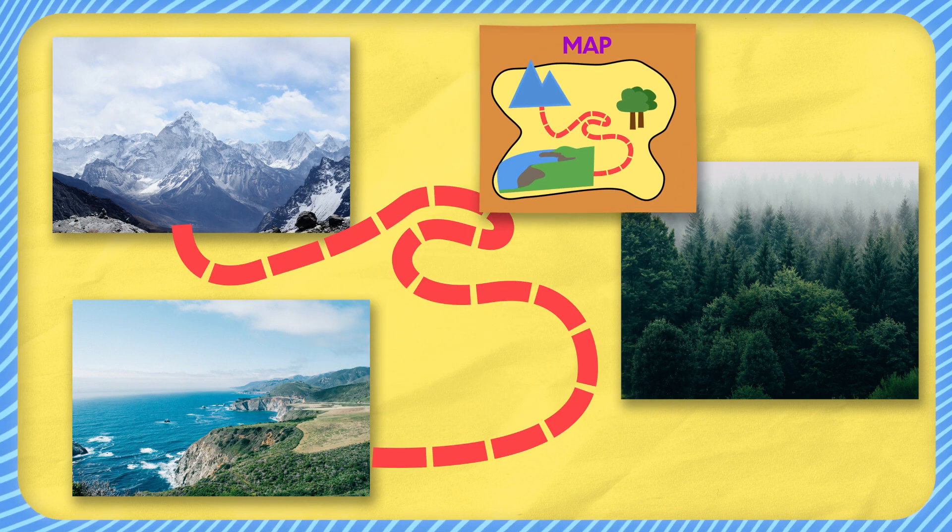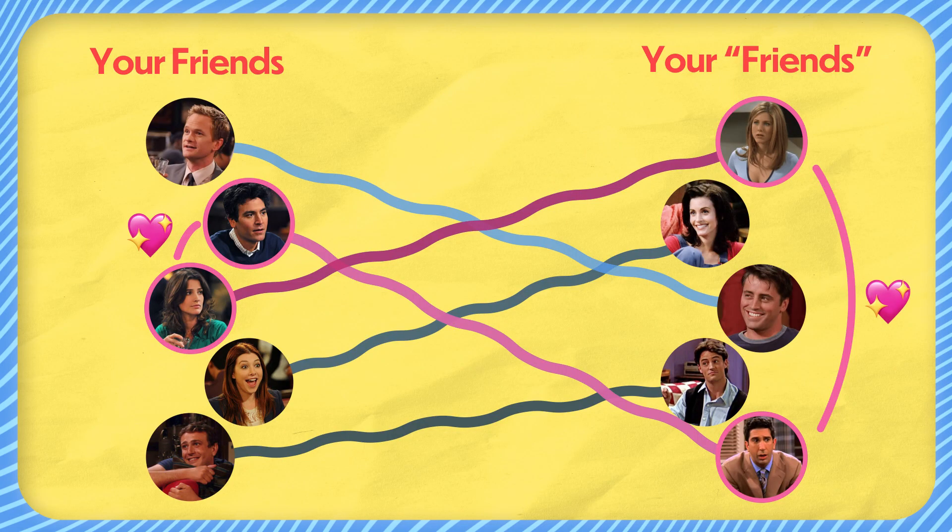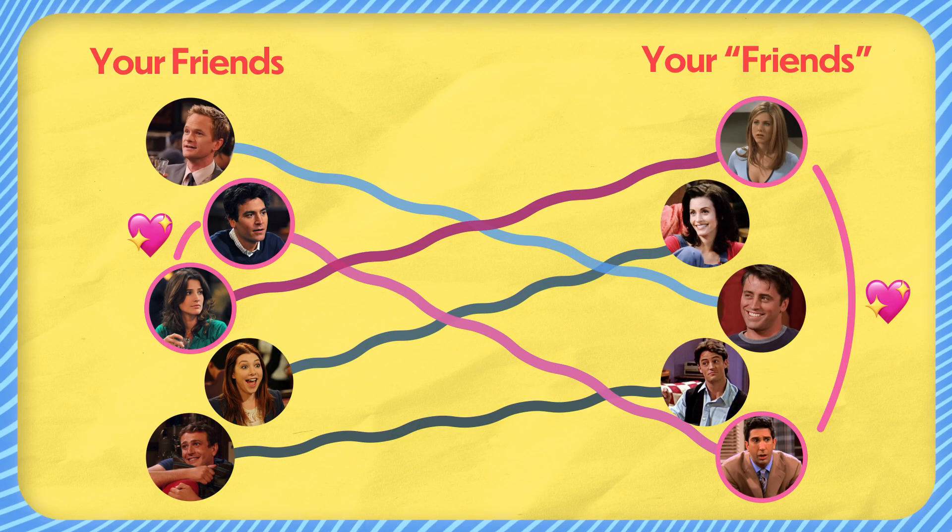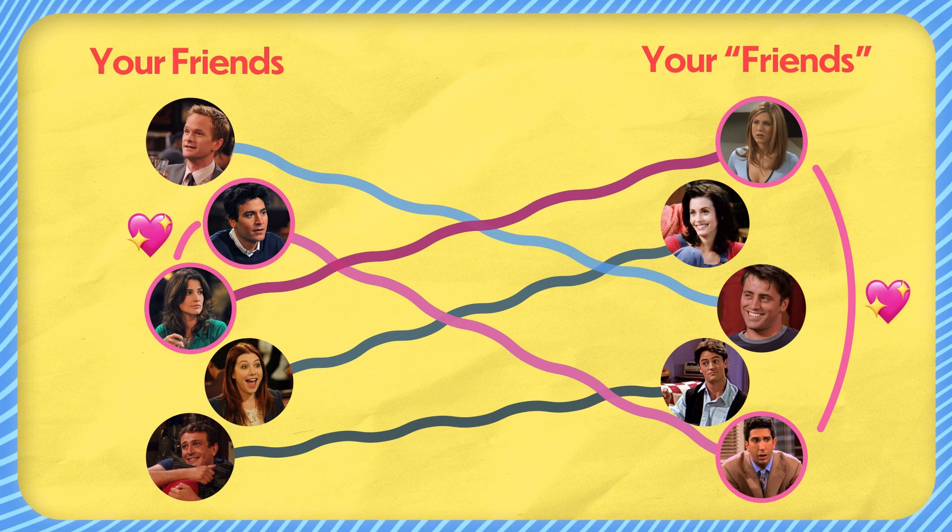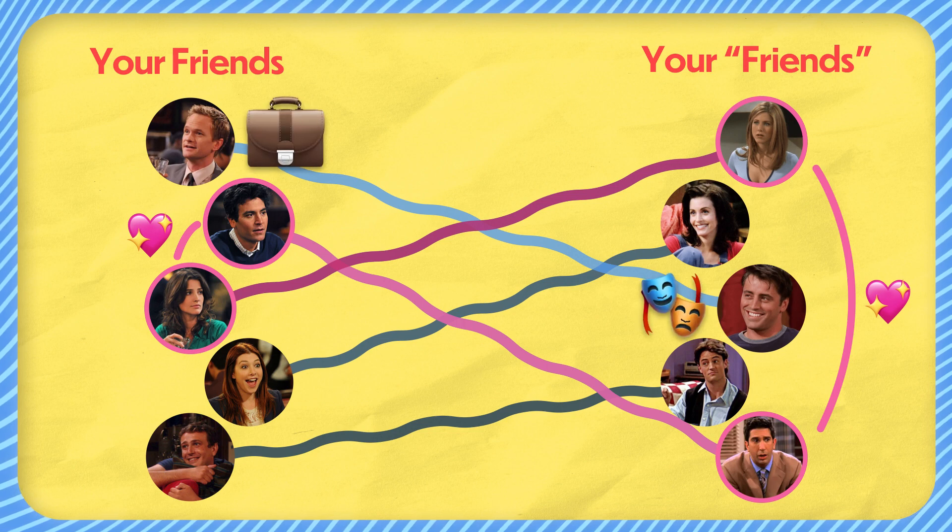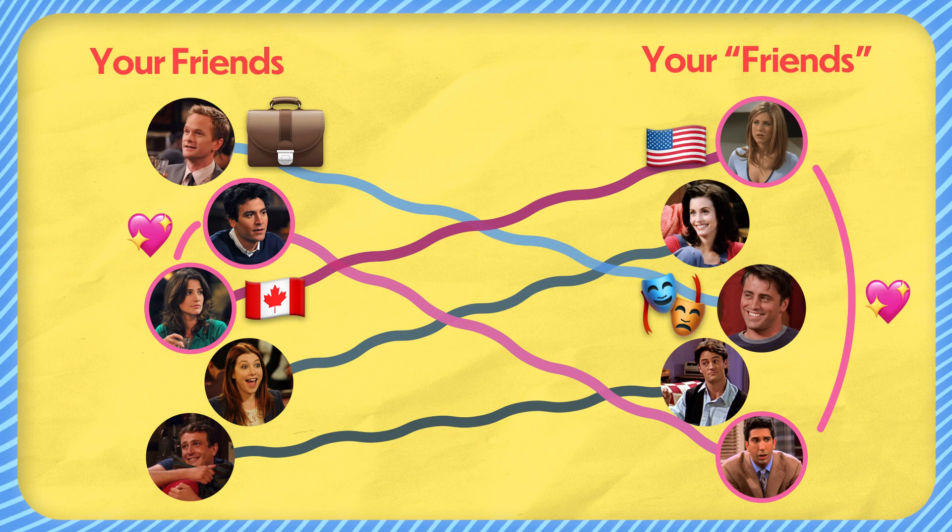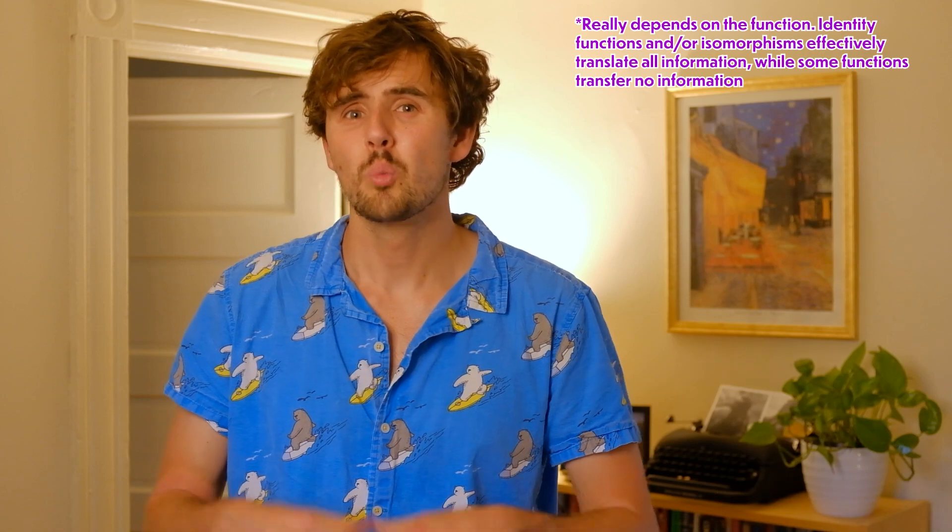And this may not sound very mathematical until you realize it's all still about finding x. Now sometimes a function can be used to transfer or translate information about one group into information about another group. But that doesn't always work. Like back to our Friends example, we saw that this function was relationship-preserving. Meaning that if two people had a relationship in the right group, their respective connectives in the left group would also have a history. But that doesn't mean that this function must also be job-preserving or nationality-preserving or anything like that. Now no function does everything. Most functions only really translate one particular type of information from one set to the other set.